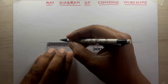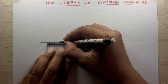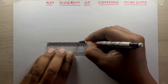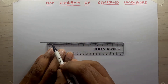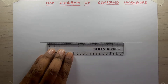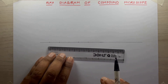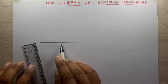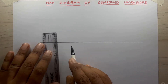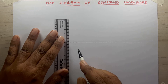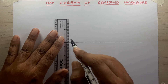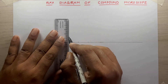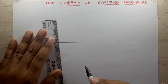I will also mark at 2 centimeters and 6 centimeters, so in every 2 centimeters I have given a mark up to 8 centimeters. The third mark, which is at 4 centimeters, is the point where my objective lens resides.